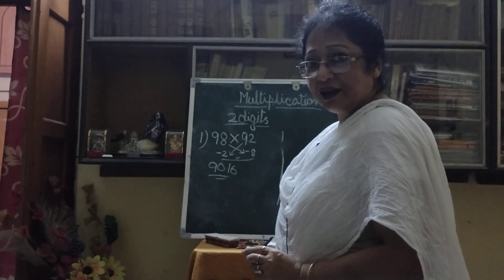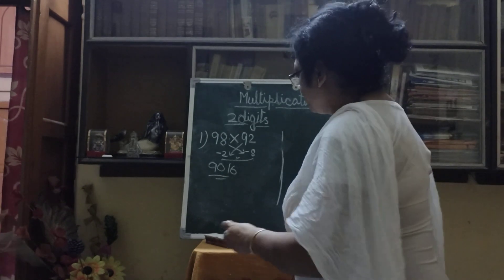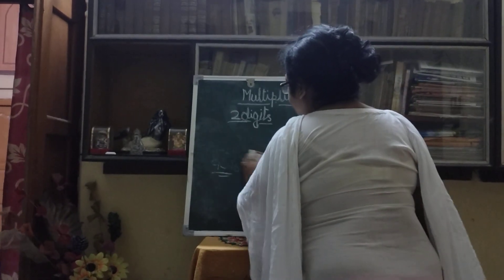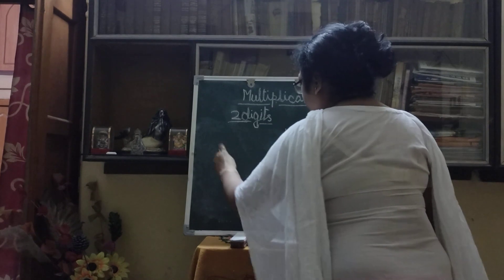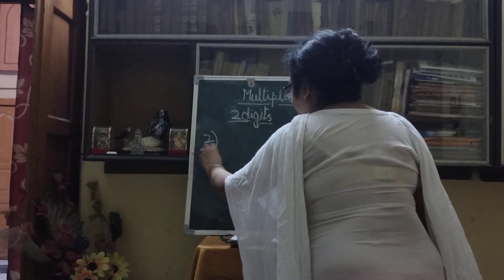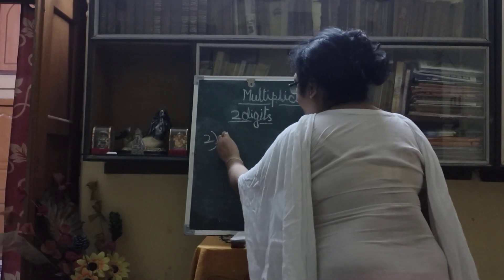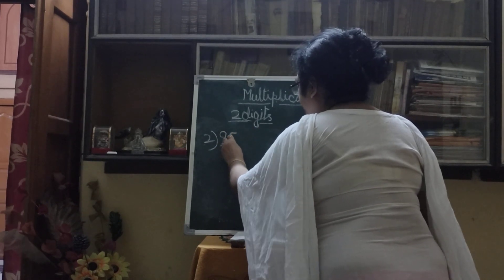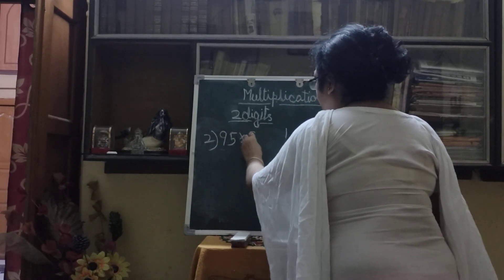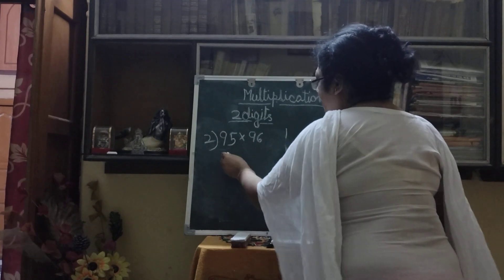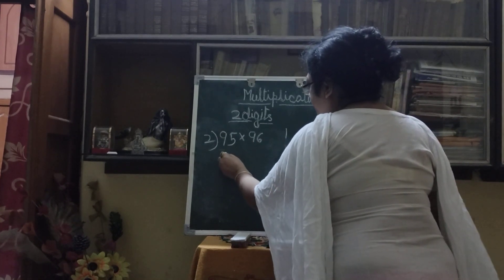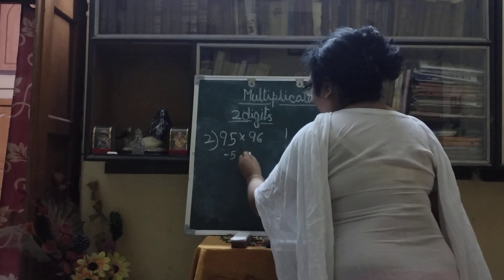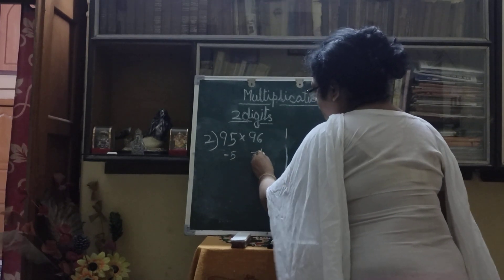Is it easy? Very easy. I am giving you another example. Let us take 95 multiplied by 96. It is less than 100. How much less? Minus 5, and this one minus 4.